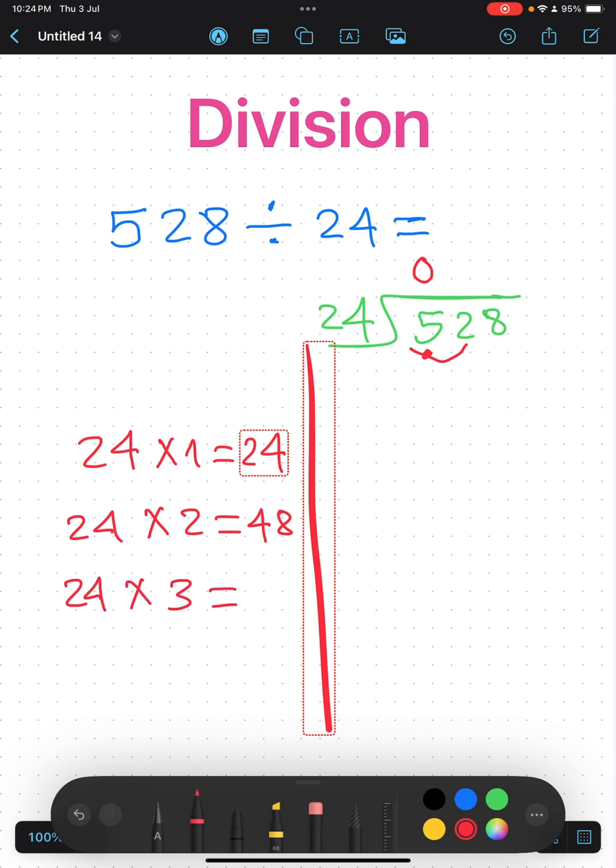24 times 1 is 24, 24 times 2 is 48, 24 times 3 is 72. 52 is between 48 and 72, so I pick the smallest, which is 2. Write it up and minus. Write it up and minus 48 down. Subtract.